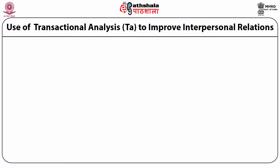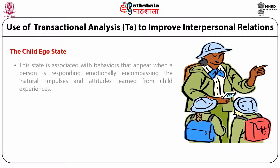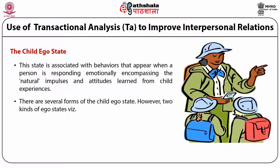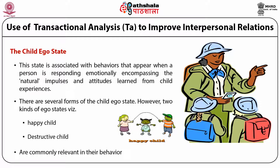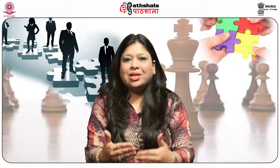The child ego state is associated with behaviors that appear when a person is responding emotionally, encompassing the natural impulses and attitudes learned from a child's experiences. There are several forms of the child ego state; however, two kinds commonly relevant in behavior are the happy child and the destructive child. Let's talk about transactional analysis and understand what are the analyses of transactions which take place with regard to different ego states.